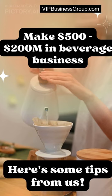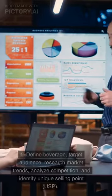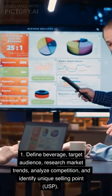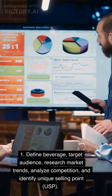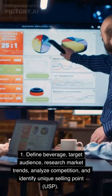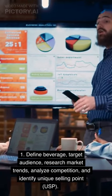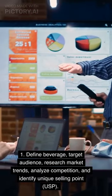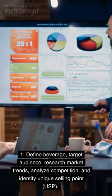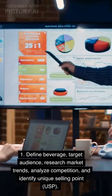vipbusinessgroup.com. Step 1: Define your beverage and target audience, research market trends, analyze the competition, and identify your unique selling point (USP).